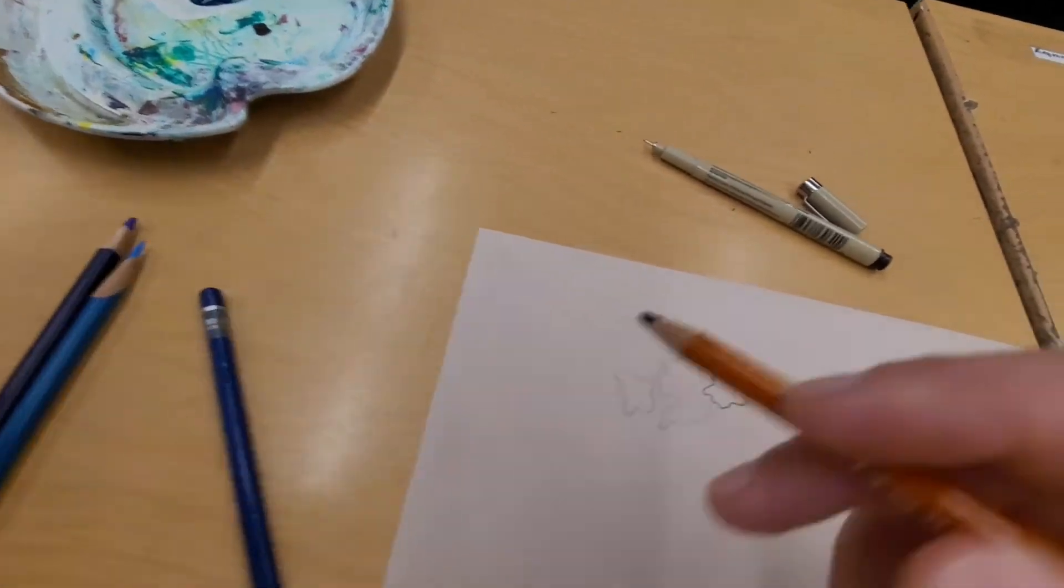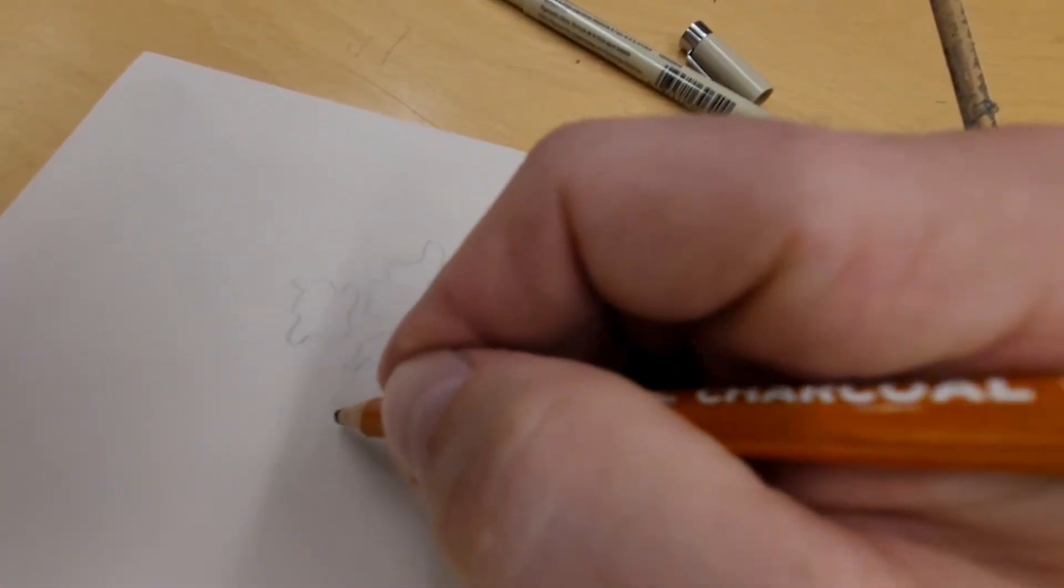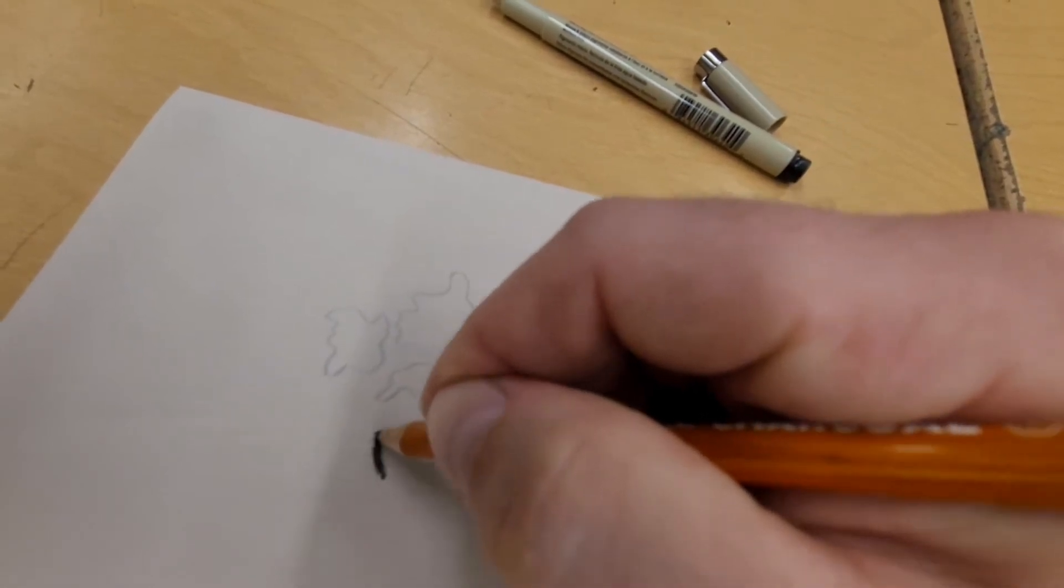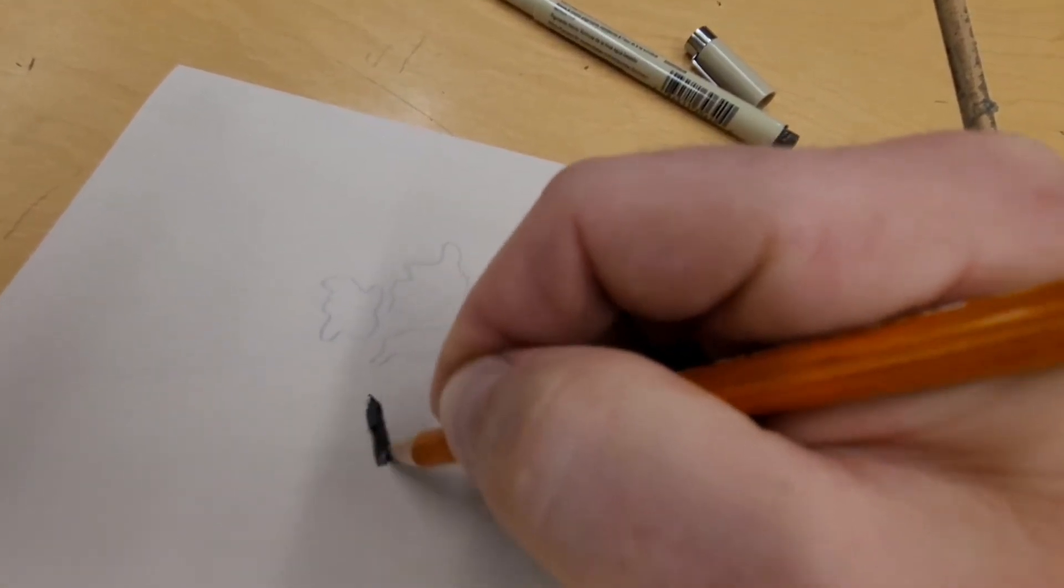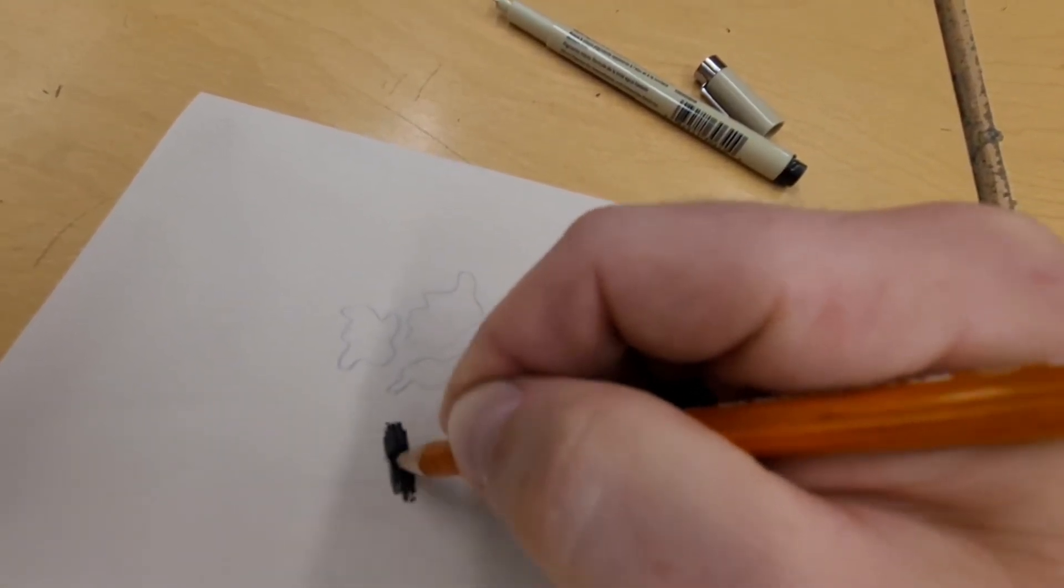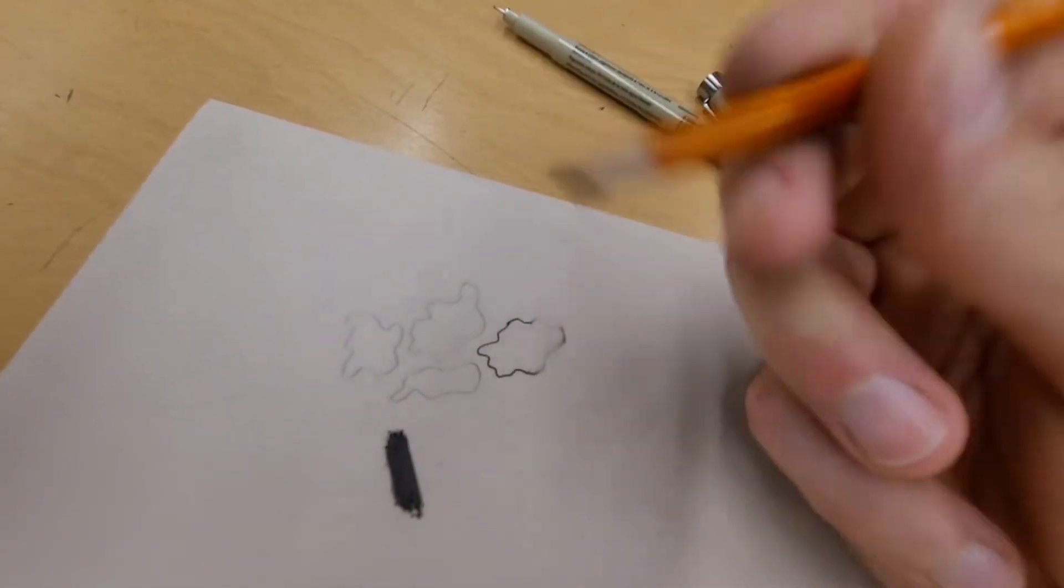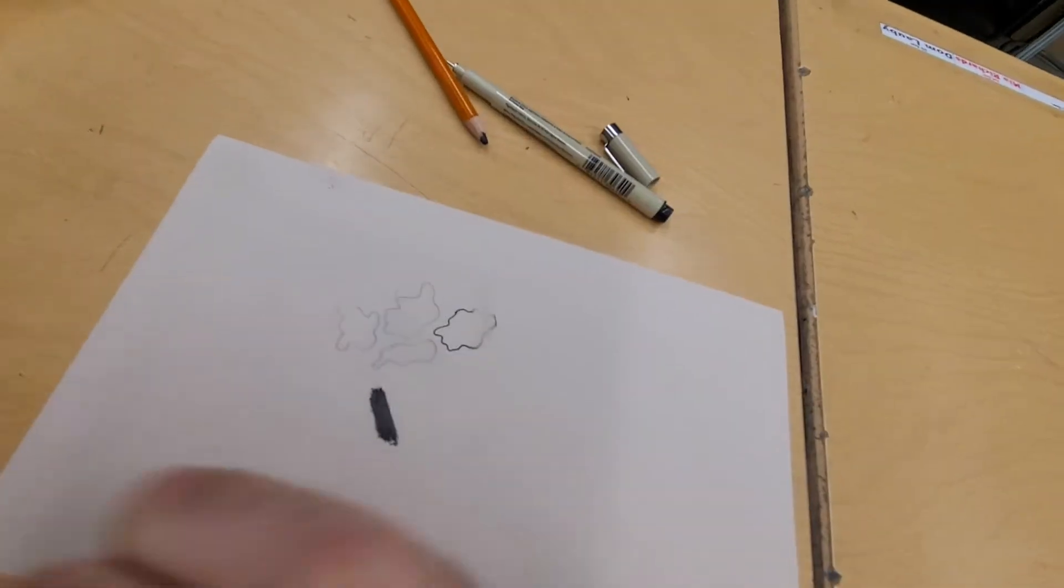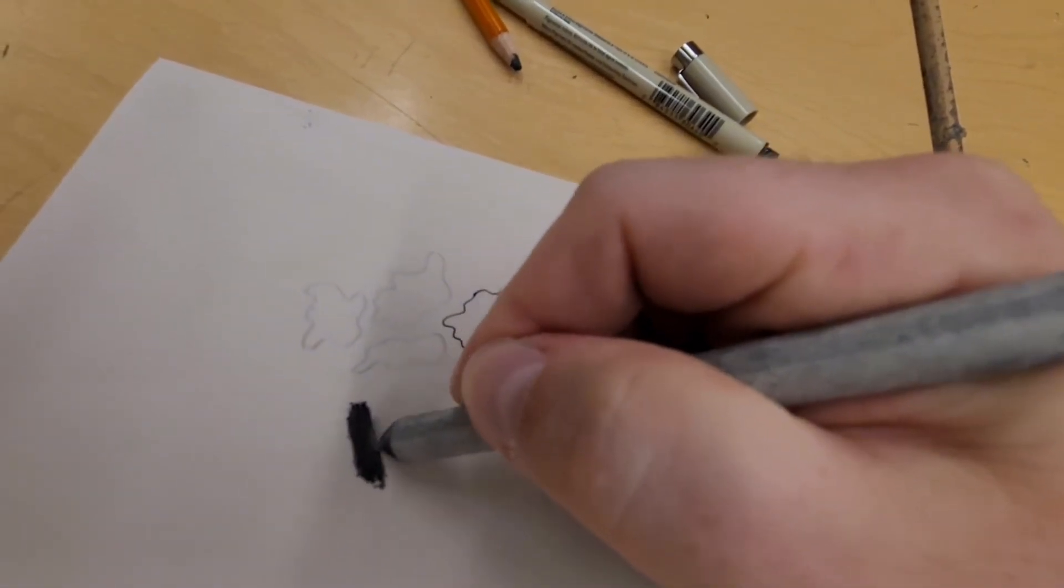With charcoal, charcoal is kind of nice with the Duralar because of how smooth it is—it allows you to do some really nice blending.